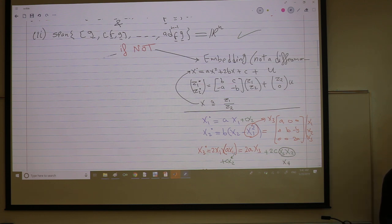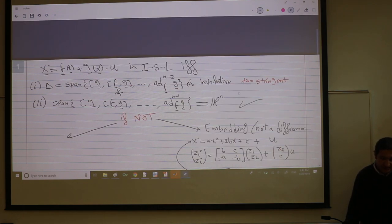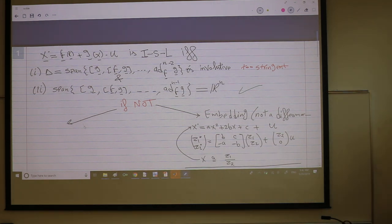Here is what we're gonna do today. If we cannot exactly linearize the system because this condition is too stringent, we can hope to linearize part of the system.